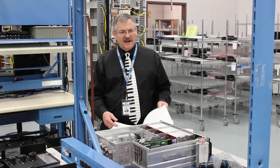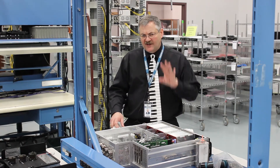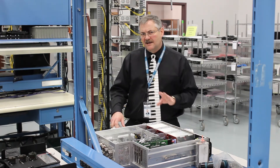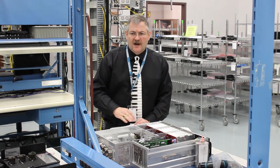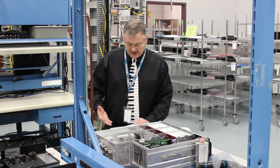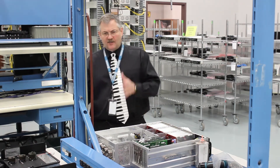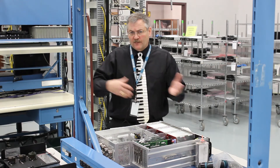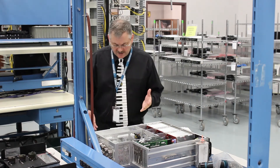Each one of those tests has a variety of potentially procedures and processes that need to be specified by the customer. Let's look at one example: MIL-STD-810 Method 501, which is high temperature operation. That test method is broken up into Procedure 1 and Procedure 2 — the first one is storage and the second one is operation.